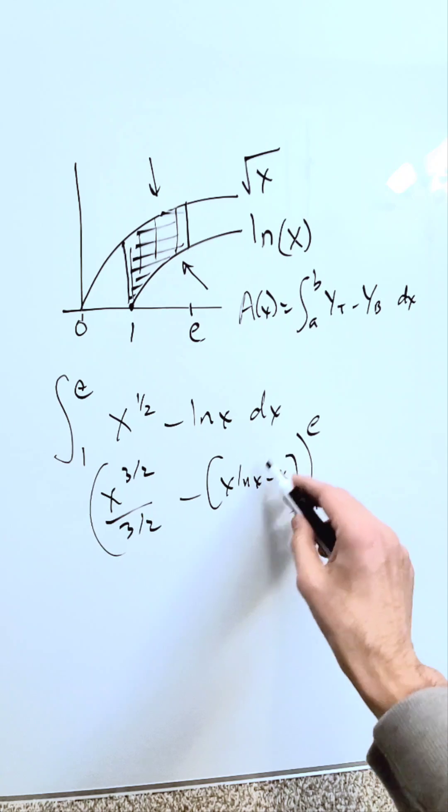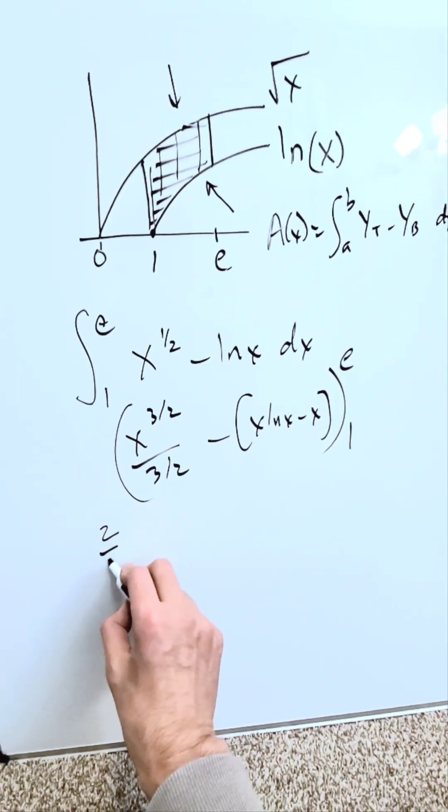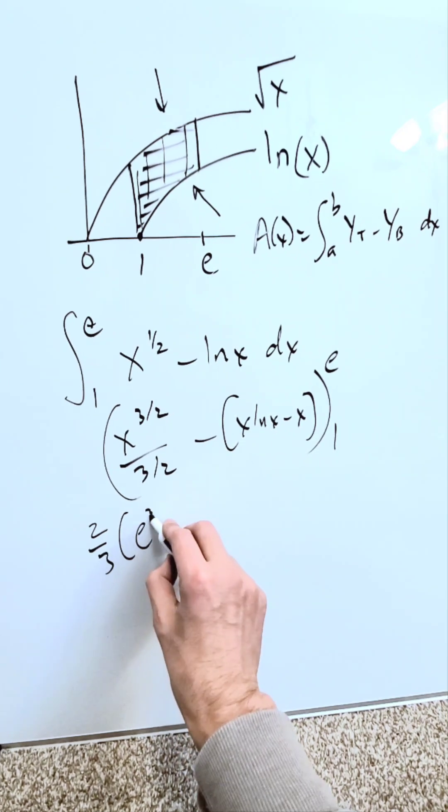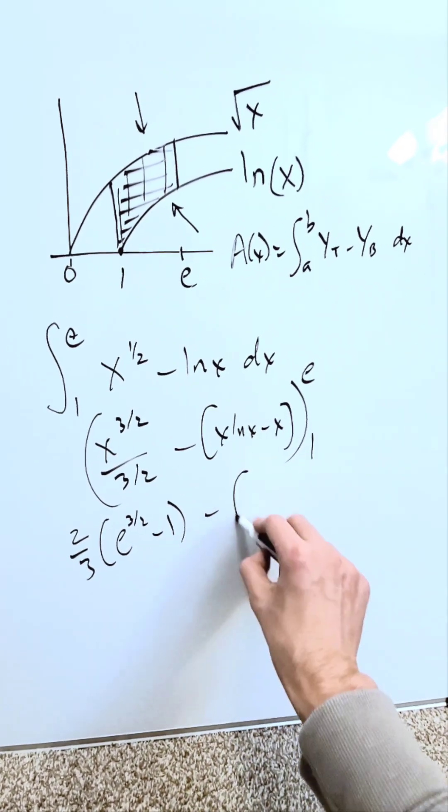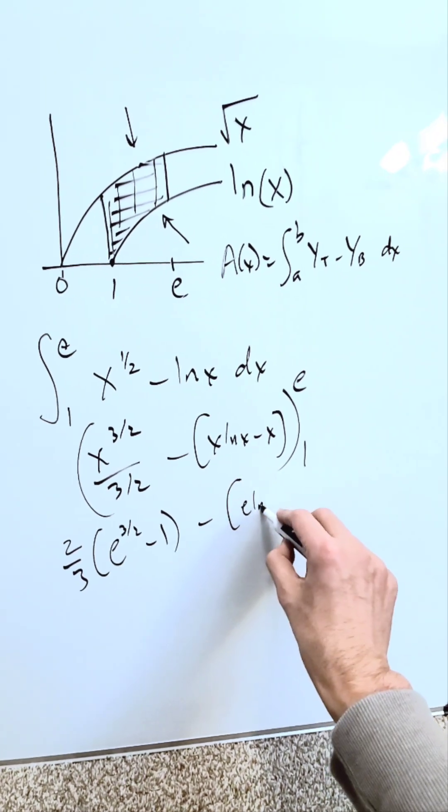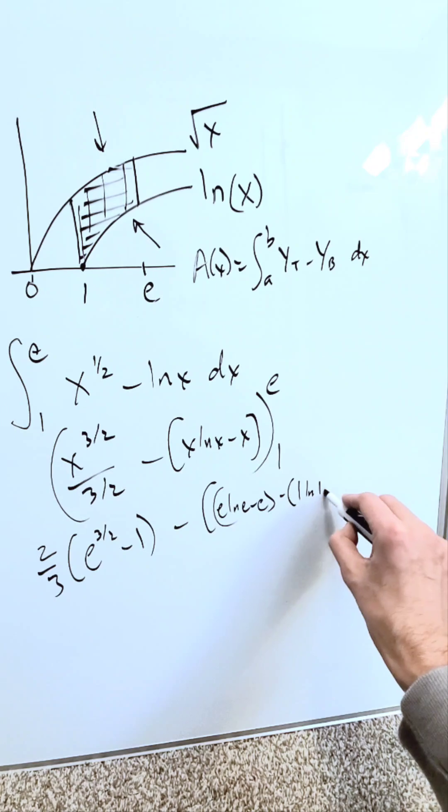Upper limit, lower limit, the difference of the two in place of x. I will flip this fraction around. I'll have 2 over 3. When I put e, I'll have e to the power of 3 over 2 minus 1 to the power of 3 over 2, which is just 1. Now put e and 1 in place of x: e natural log e minus e, minus the lower limit, 1 natural log 1 minus 1.